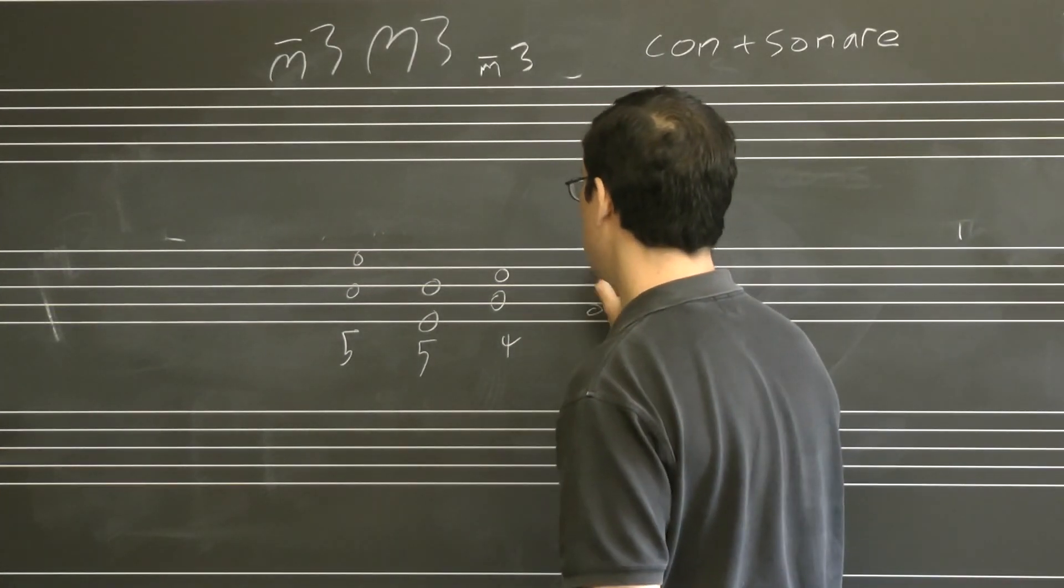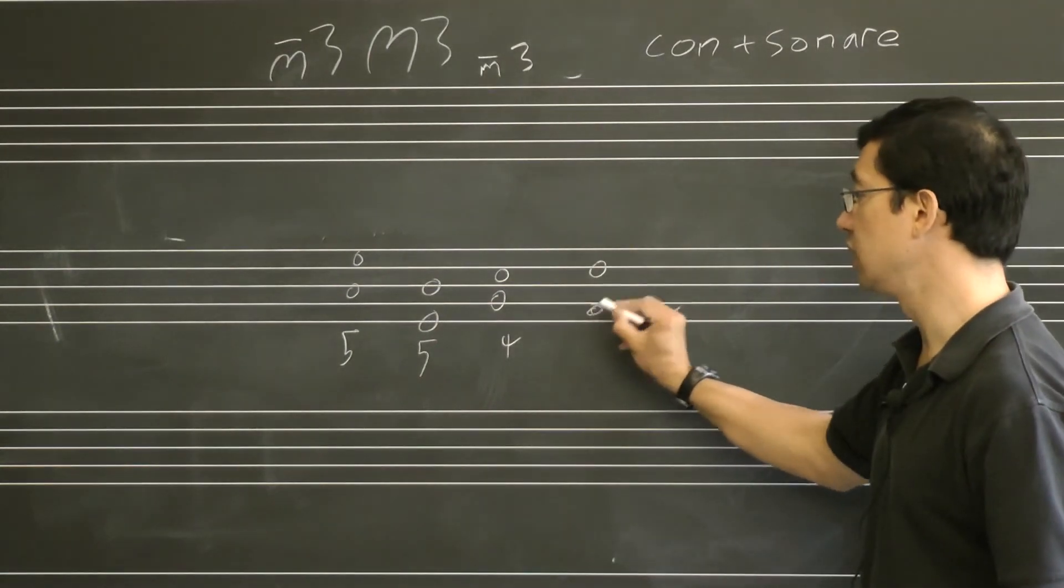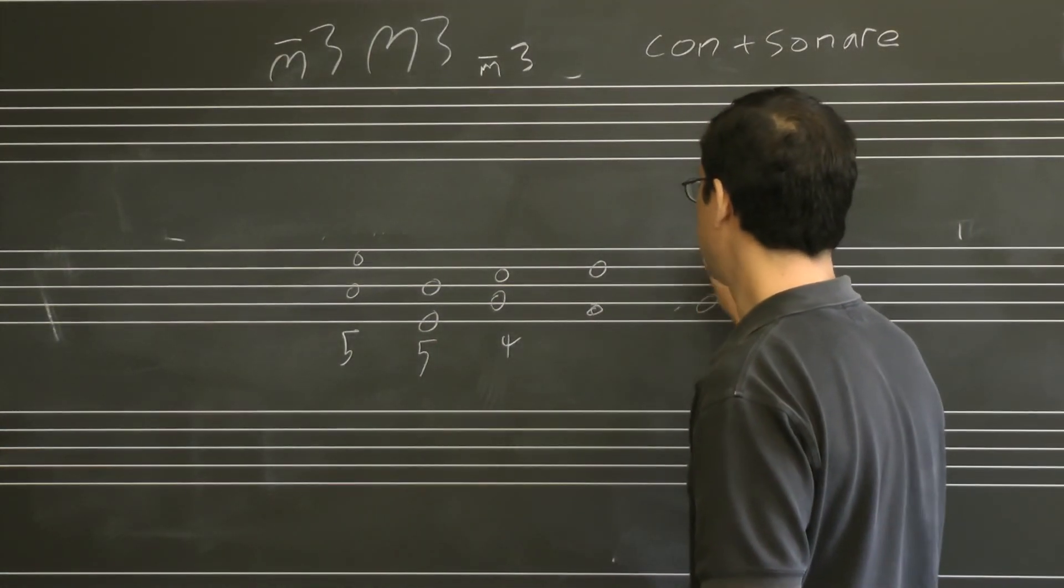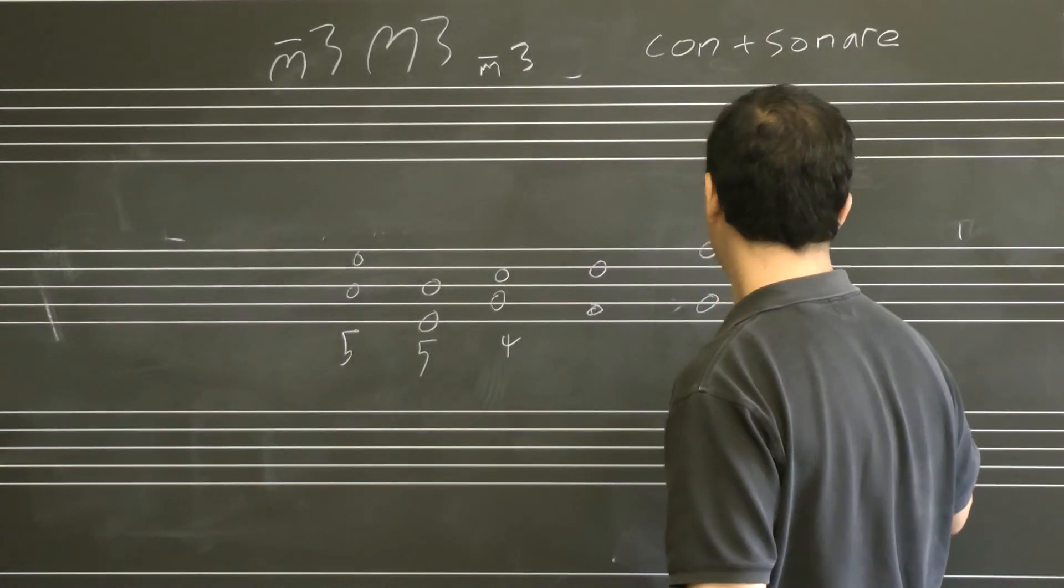The sixth, of course, one larger than that, it's an even numbered interval, so it's line and space. The seventh - the seventh, two lines - the octave.